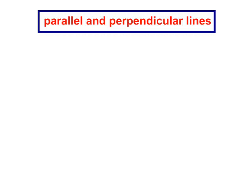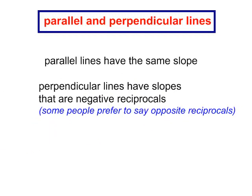We are going to talk about parallel and perpendicular lines. Parallel lines have the same slope. Perpendicular lines have slopes that are negative reciprocals. Some people like to say opposite reciprocals.